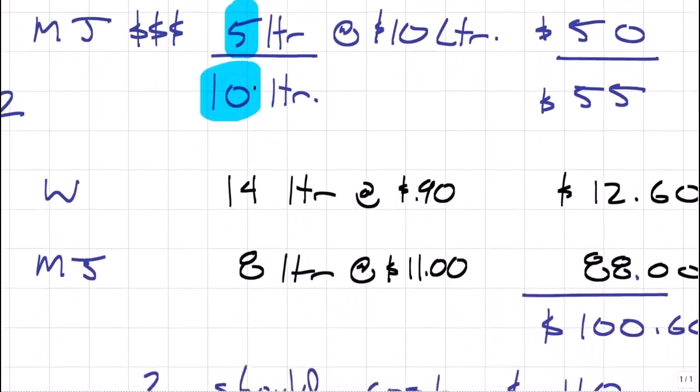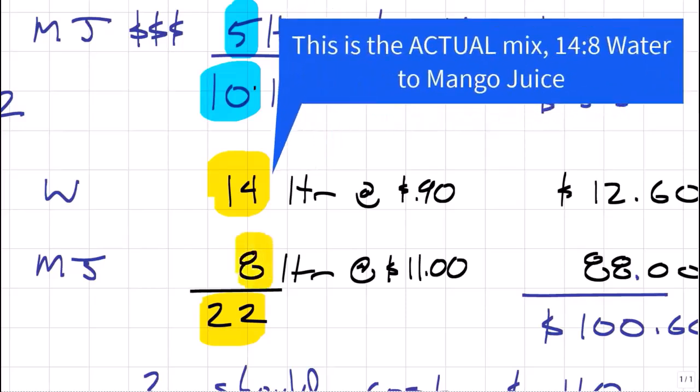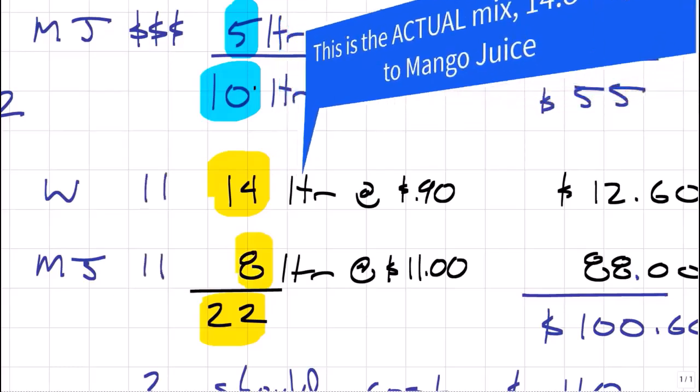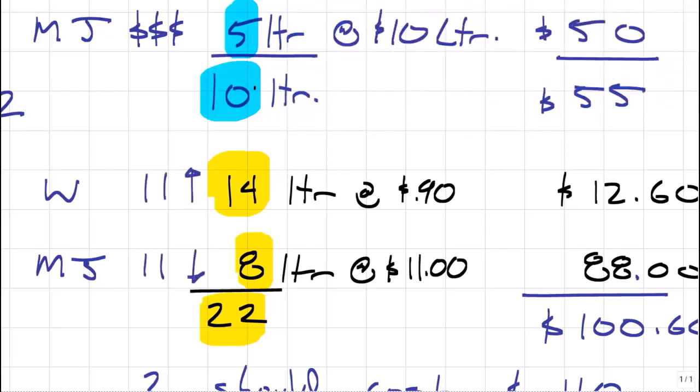Guys, let's look at the actual results. We see that 22 liters were used to make our two drinks. Let's focus on the ratio of the inputs. And we see a different ratio, not one-to-one, but we see more of the water, less of the mango juice. If it was one-to-one, it would be 11-11. Look at that. They use more of the water, less of the mango juice. Guys, did we use more or less of the cheap stuff? We use more of the cheap stuff. So the mix variance, everybody, is favorable.